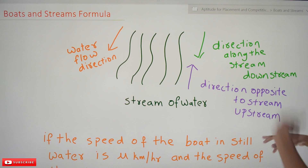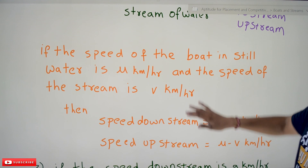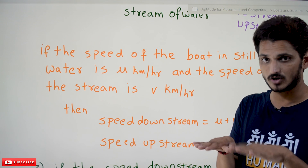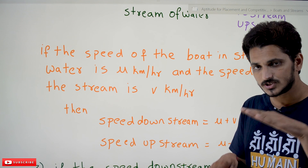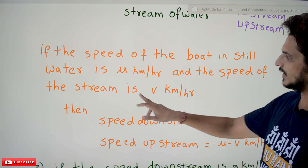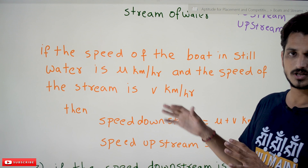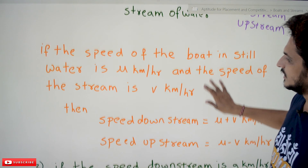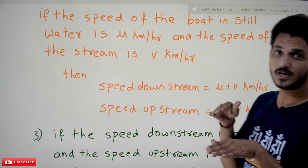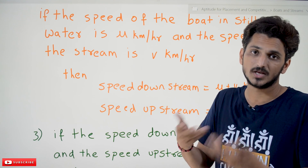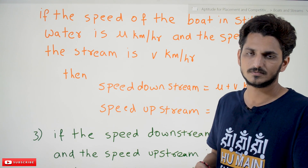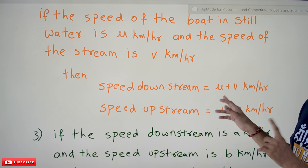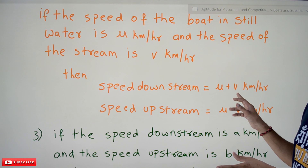These are the terms we use in boats and streams. Now coming to the formula: if the speed of the boat in still water is u kilometers per hour — meaning the water is not flowing in any direction — and the speed of the stream is v kilometers per hour, then speed downstream equals u plus v kilometers per hour, because the water helps in moving the boat faster.